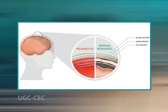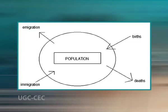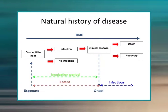Epidemiology is concerned with the frequency and pattern of health events in a population. Frequency refers not only to the number of health events — such as cases of meningitis or diabetes — but also to the relationship of that number to the size of the population. The resulting rate allows epidemiologists to compare disease occurrence across different populations. Pattern refers to the occurrence of health-related events by time, place, and person. Time patterns may be annual, seasonal, weekly, daily, hourly, weekday versus weekend, or any other breakdown of time that may influence disease or injury occurrence.